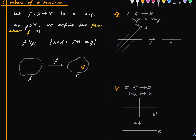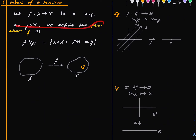Another example is a map which is even simpler than the first one — it just drops the second coordinate. Here one can actually see the fibers in an even easier way. For any point on the real line, the fiber above that is just the line above it in this diagram. And here they look a lot like fibers — so this terminology kind of comes from that.